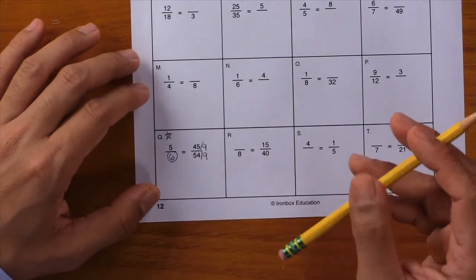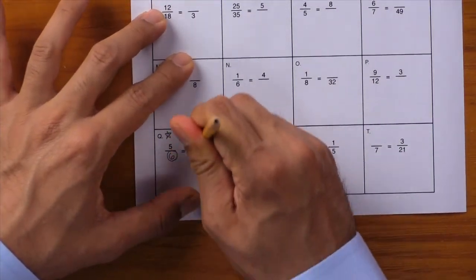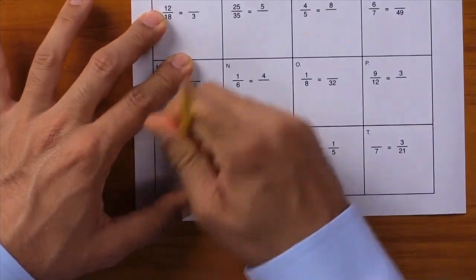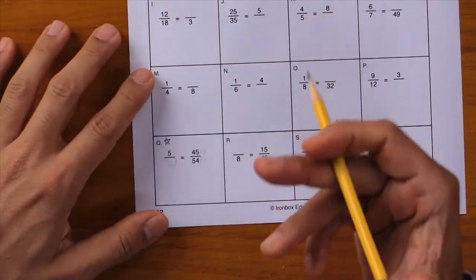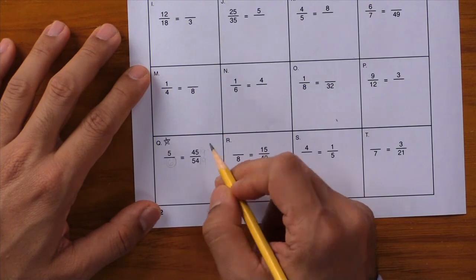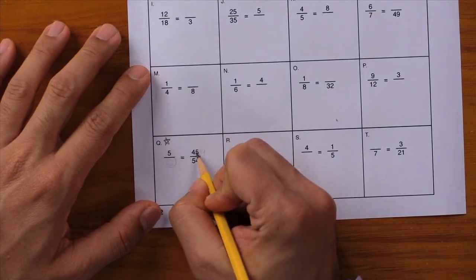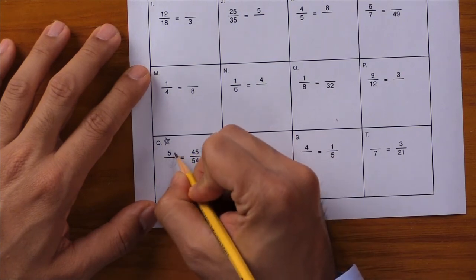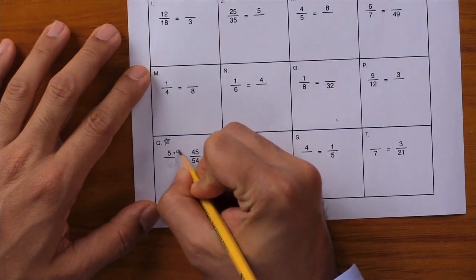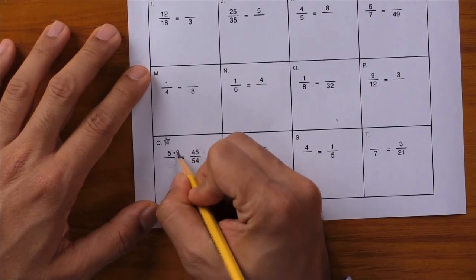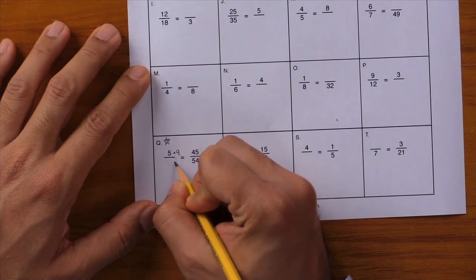What if we did the other way around instead? So let me erase this and we'll go from the empty side to the full side. Starting with 5, how did we get to 45? We did that by multiplying by 9. So multiply by 9, and whatever you do on top in the numerator, do the same thing in the denominator.